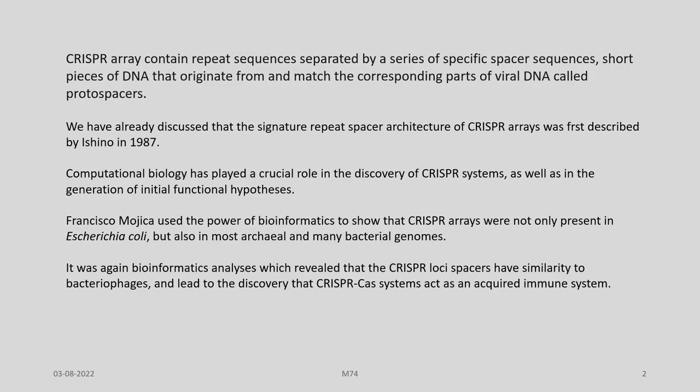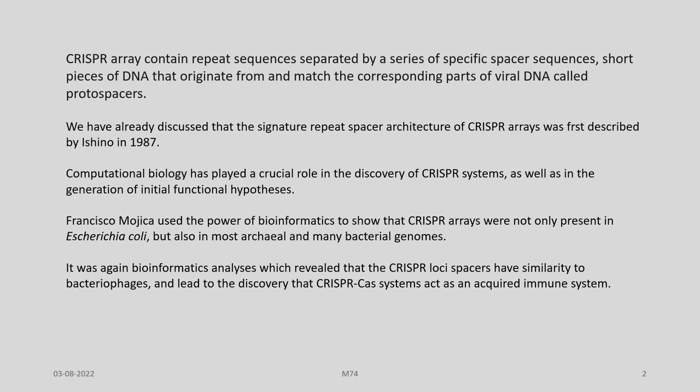CRISPR arrays contain repeat sequences which are separated by a series of specific spacer sequences — short pieces of DNA that originate from and match the corresponding parts of viral DNA called proto-spacers. The signature repeat-spacer architecture of CRISPR arrays was first described by Isino et al. in 1987, and then Francisco Mojica also reported about them. Since the beginning, computational biology has played a crucial role in the discovery of CRISPR systems as well as in the generation of initial functional hypotheses.